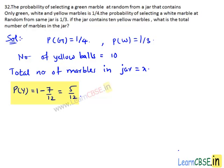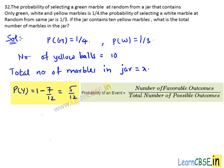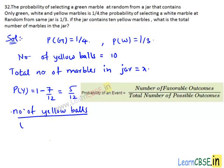We have obtained the probability of selecting a yellow marble as 5/12. We know that the probability of any event is the ratio of the number of favorable outcomes to the total number of possible outcomes. So P(Y) = number of yellow balls divided by total number of marbles in the jar = 5/12. This implies 10/x = 5/12.